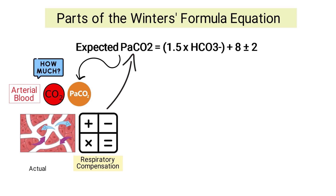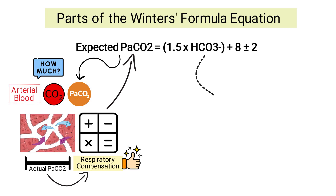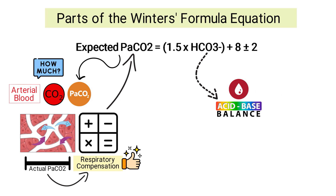Next up is HCO3, which stands for bicarbonate, or bicarb for short. This is a measure of the acid-base balance in the blood and is measured by collecting and analyzing an arterial blood gas sample from the patient. The bicarb value is the only piece of information needed to calculate the expected PaCO2 using Winter's formula.